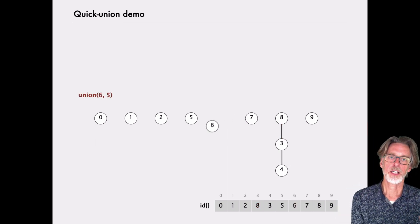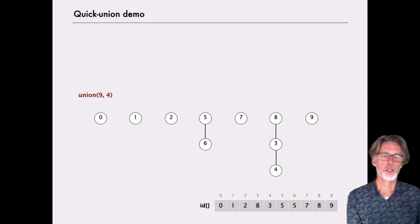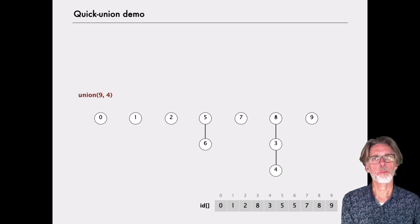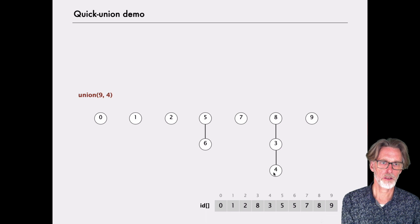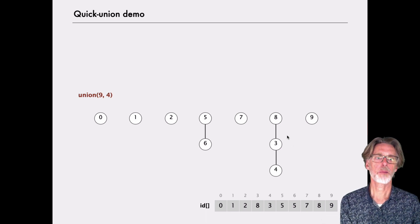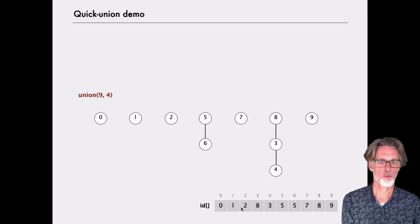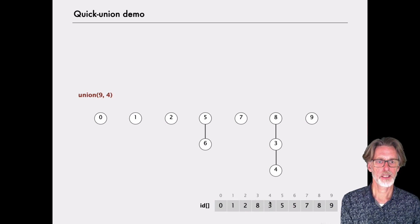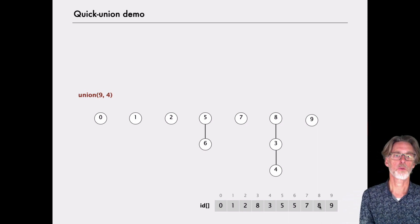If we union 6 and 5, it behaves just as it did in quick find. When we try to union 9 and 4, we do have to look all the way up however, to find the champion of 4. We can't just look immediately from 4 to 3. We need to keep going from 4 to 3 to 8. So walking through our array, we start at the fourth index, we see 3. We go to the third index, we see 8. That takes us to the 8 index, which we see is 8 itself. And so we're done.